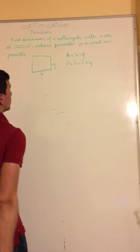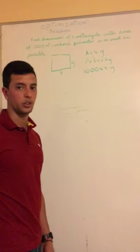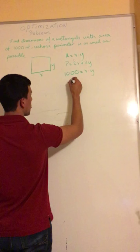They are giving you the total area which is 1000 equals x times y, and you have to have just one variable in order to plug it into the perimeter. So it will be 1000 over x equals y.